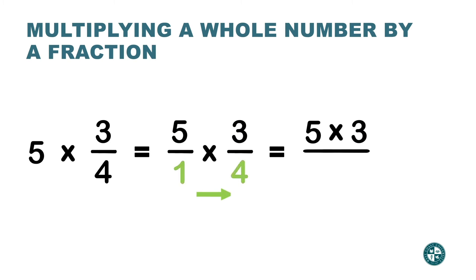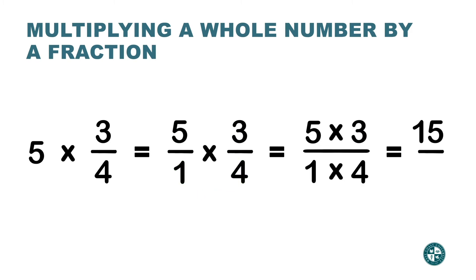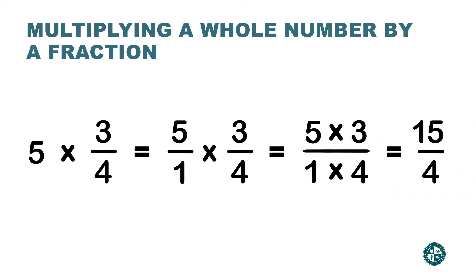And you just do the same thing: 5 times 3 is 15, 1 times 4 is 4. Now if fractions are improper, leave them as fractions for the moment. Later on we're going to convert all the fractions into decimals.